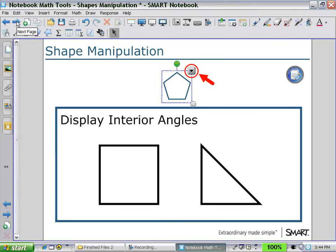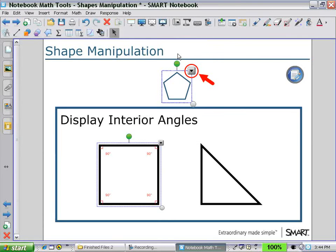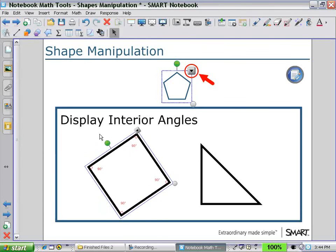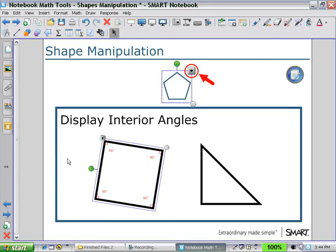Next we can display the interior angles, again selecting a shape, using the arrow pull down menu, and show and hide interior angles. As we rotate the shape, notice that the angles stay vertical so that they can be read easily.